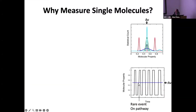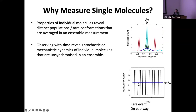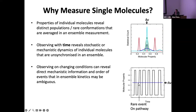There are obviously lots of ways to get the same average if we do ensemble experiments — you can always get this average, but if you looked at the single molecules you might find there are a lot of different things going on in the background. Properties of individual molecules reveal distinct populations. Single molecule events also allow us to look at rare events, and observing with time reveals the stochastic and mechanistic dynamics of individual molecules. Single molecule experiments also allow us to mechanically control — we can actually alter single molecules and see what effect putting strain or load onto proteins can do.